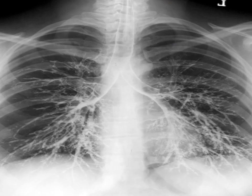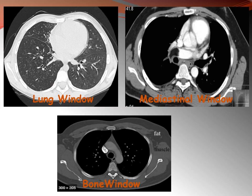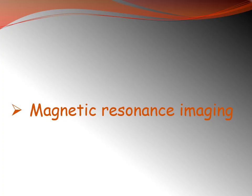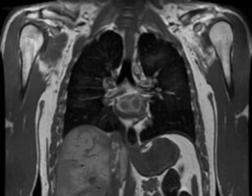Bronchography is used to assess the tracheobronchial tree, as seen in the image. Regarding CT windows: we use lung window for the lungs, mediastinal window for the mediastinum, and bone window to assess the bones. CT imaging can be presented in axial and coronal planes.